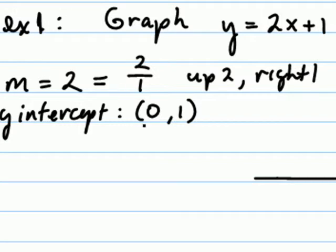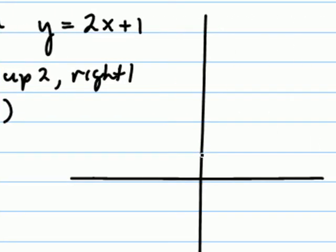So we've identified the slope and the y-intercept. To actually graph the line using that information, our first step is to plot the y-intercept, which would be the ordered pair zero, one.